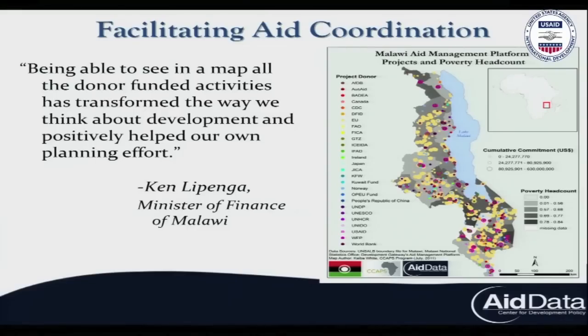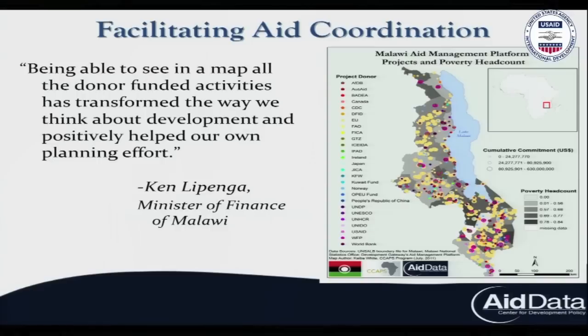Effective donor coordination requires that each donor knows what every other donor is doing and where. In the summer of 2011, Aid Data, in partnership with the University of Texas at Austin, proved that this is possible by geocoding the entire universe of aid within Malawi. This enabled more effective donor coordination, both between donors and with the government of Malawi, to reduce duplication and other sources of inefficiency.